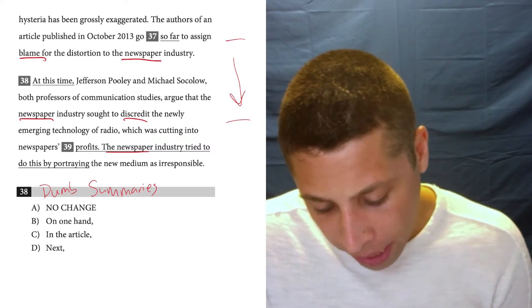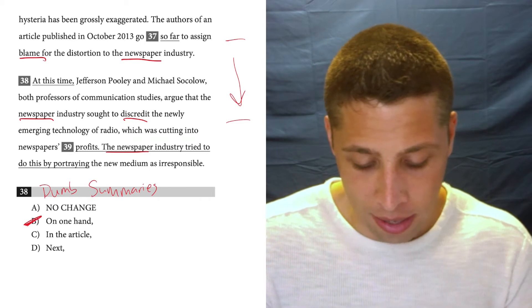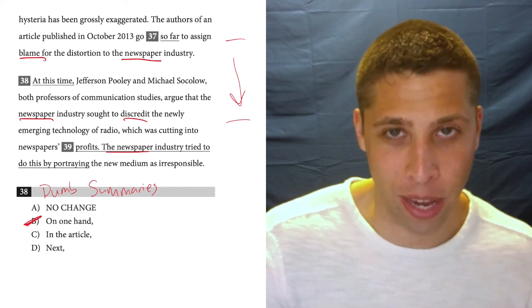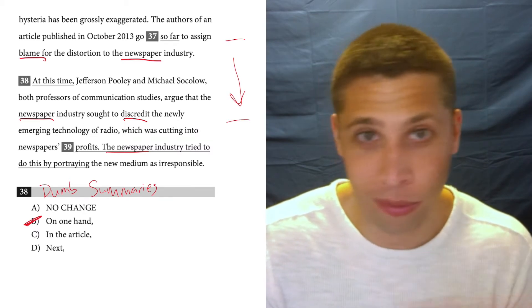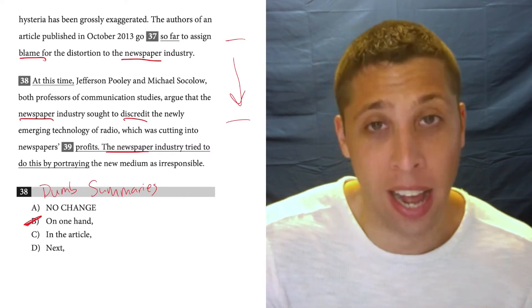So that would probably get rid of something like B, because on the one hand implies that we're going to have another transition somewhere that's like on the other hand. And I don't really see that, so I don't know why that would work. That doesn't fit with what the context is.